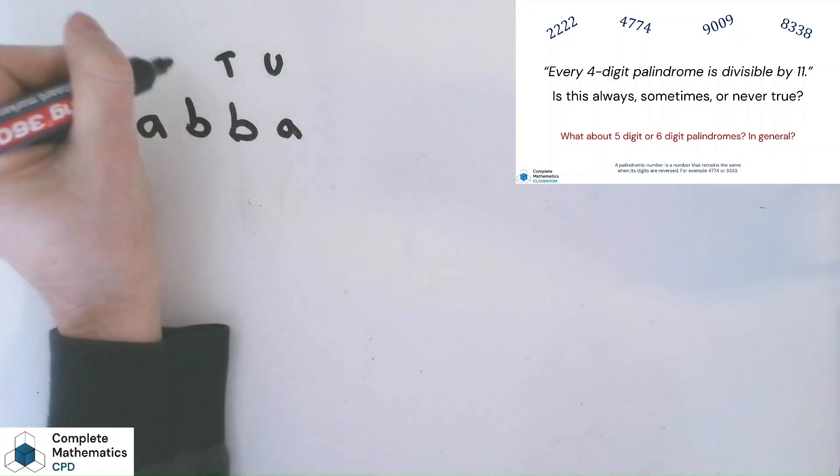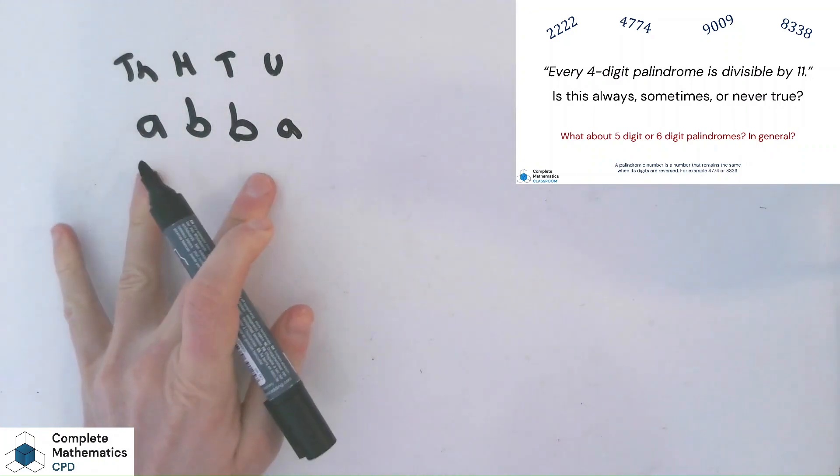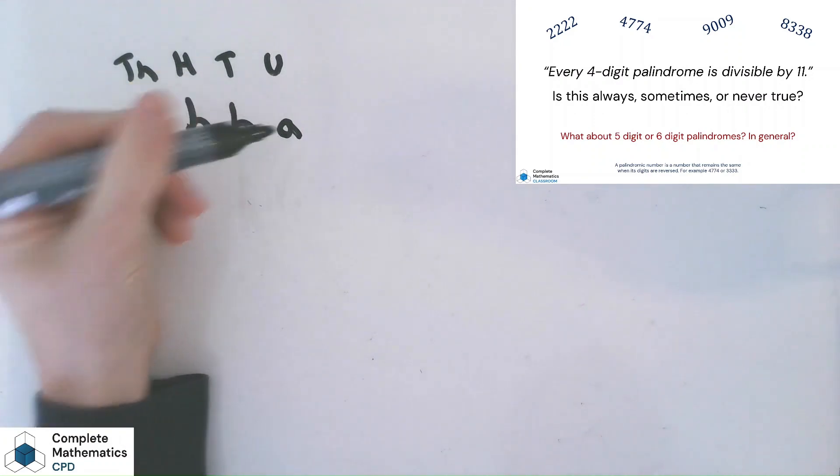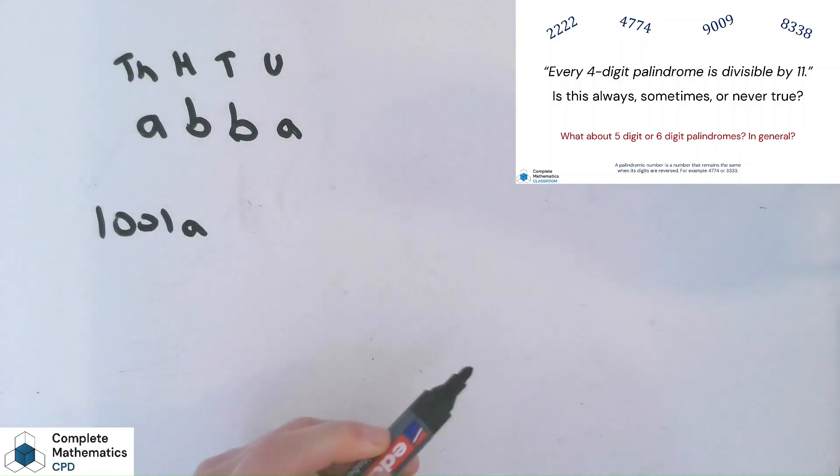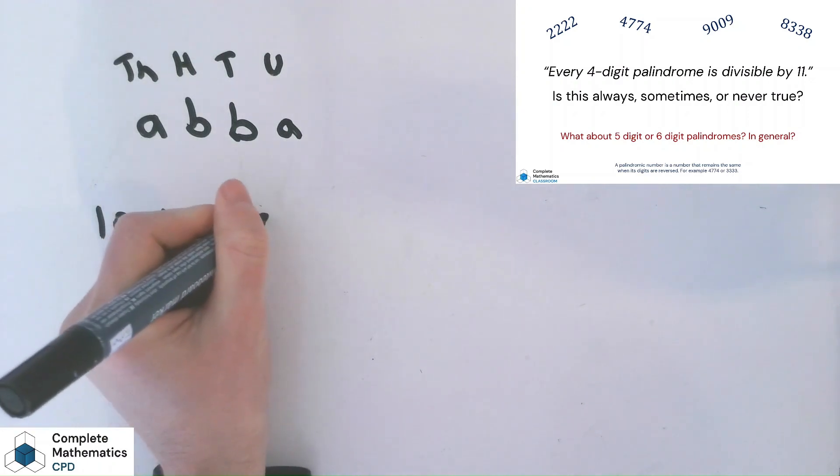And actually write in the place value heading. So we've got our units, tens, hundreds, and thousands. And actually, how many A's and how many B's are there? Well, there are 1001 A's. And how many B's are there? There's 110 B's.